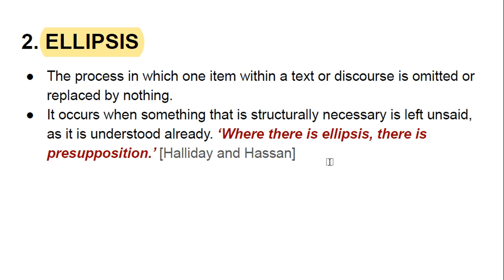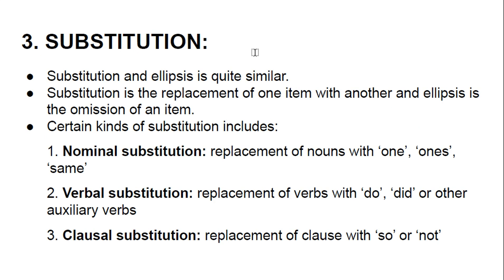Substitution and ellipsis are quite similar. Substitution is the replacement of one item with another, while ellipsis is the omission of an item. There are three kinds of substitution: nominal substitution — replacing a noun with 'one' or 'ones'; verbal substitution — replacing verbs with 'do', 'did', or another auxiliary verb; and clausal substitution — replacement of a clause with 'so' or 'not'.